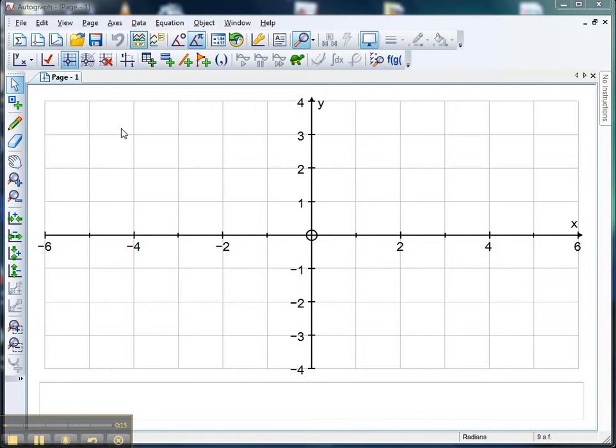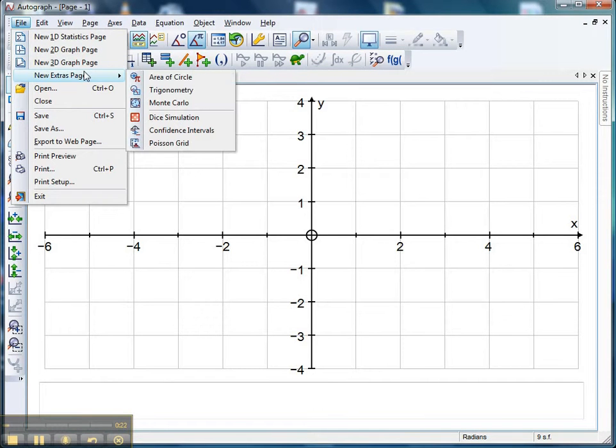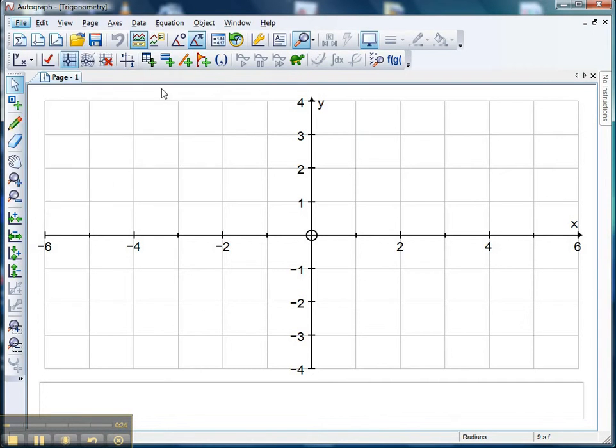So first let's find it. I've just opened Autograph in advanced mode, but standard mode is fine as well. Hover up to File, New Extras page, and there we go, Trigonometry.